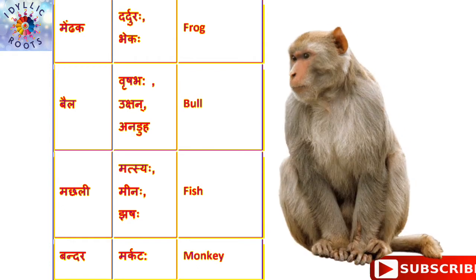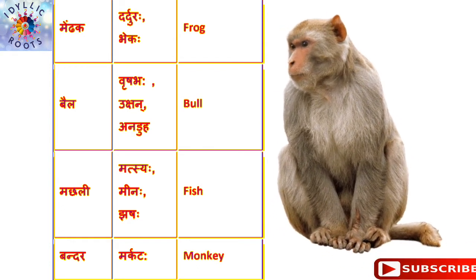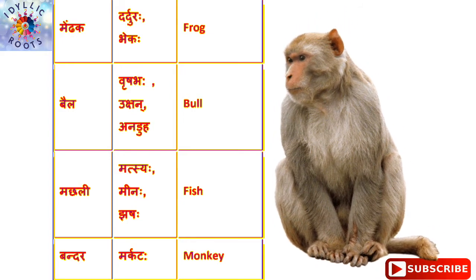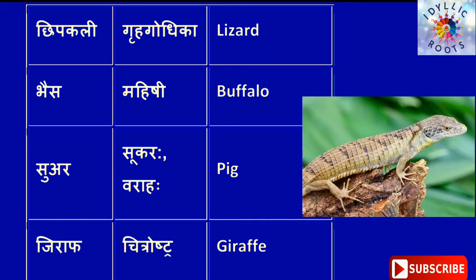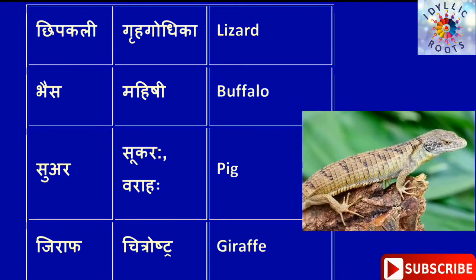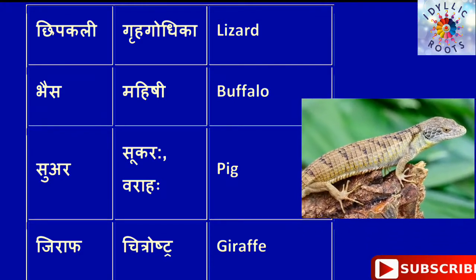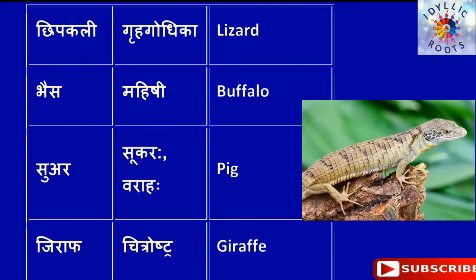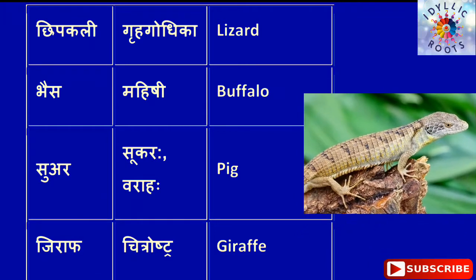मछली को English में कहते हैं Fish और संस्कृत में कहते हैं मत्स्यः। बन्दर को English में कहते हैं Monkey और संस्कृत में कहते हैं मर्कटः। छिपकली को English में कहते हैं Lizard और संस्कृत में कहते हैं गृहगोधिका।